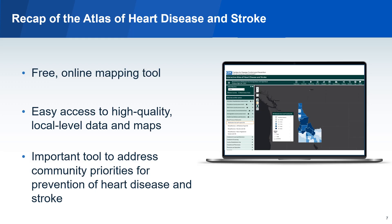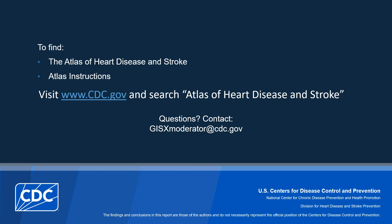To recap, the Atlas is a free online mapping tool that makes it easy to access high-quality, local-level data and maps that can be used to address community priorities for prevention of heart disease and stroke. For more information, visit www.cdc.gov and search for Atlas of Heart Disease and Stroke.